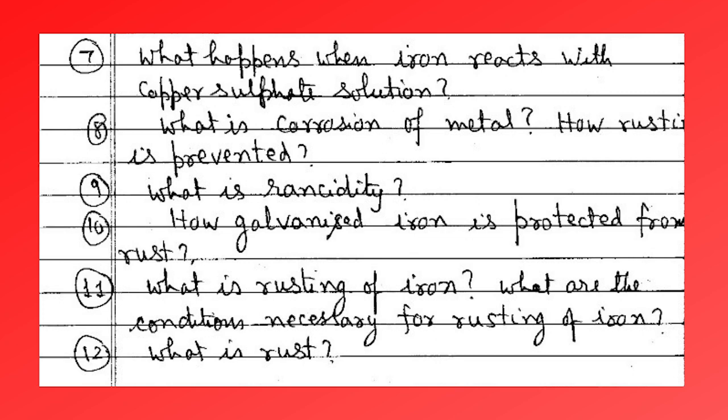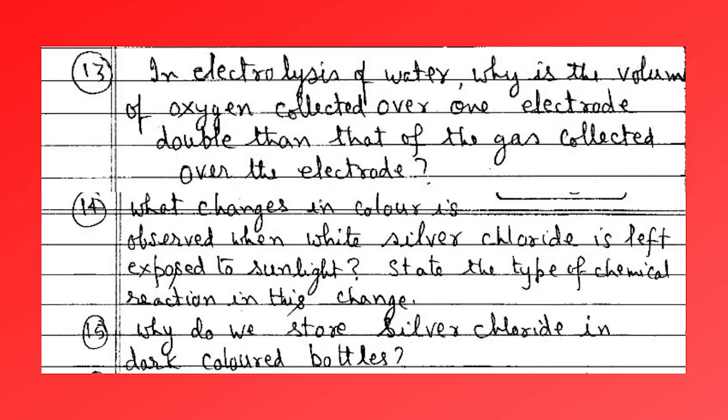What is rust? In electrolysis of water, what is the volume of oxygen collected over one electrode — is it double that of the gas collected over the other electrode? What color change is observed when white silver chloride is left exposed to sunlight, and state the type of chemical reaction.